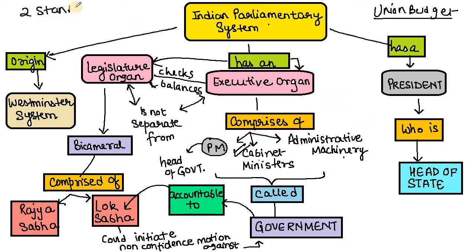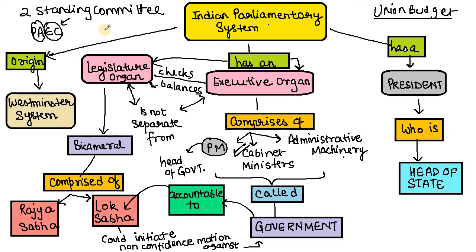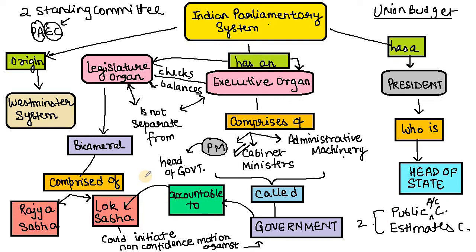There are two kinds of standing committees you need to remember: the Public Accounts Committee (PAC) and the Estimates Committee. These are part of parliament and keep a check on how the executive is spending the money given to it by the legislature. We have also studied other functions of parliament: amending functions, electoral functions, and judicial functions.